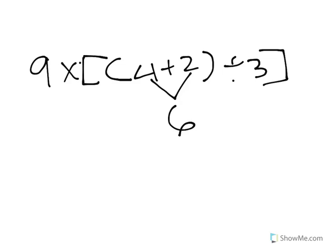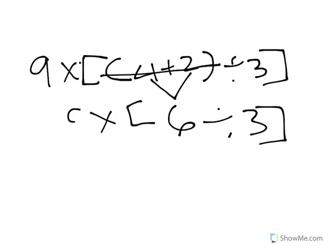Then you bring the 6 and everything else down. You cross this out and you write everything else. Times 9.